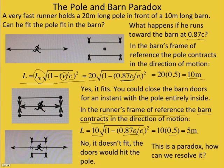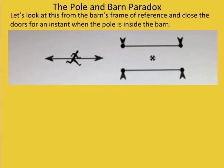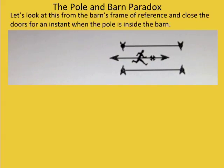How can we resolve this? Well, we have a computer program that runs this using the equations of special relativity. So let's look at the barn's frame of reference, our frame of reference. Close the doors for an instant. And so the pole has contracted in our frame of reference and fits inside the barn. And we close the doors for an instant. And the pole is entirely within the barn during that instant with the doors closed.